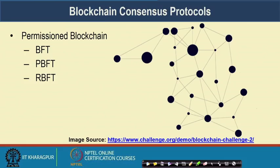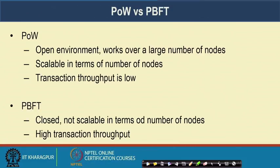In the permissioned Blockchain environment, the consensus algorithm is primarily governed by different variants of Byzantine Fault Tolerant protocols, ranging from the standard BFT to PBFT — Practical Byzantine Fault Tolerant — and in the case of Hyperledger, another class called RBFT, or Redundant Byzantine Fault Tolerant algorithms.